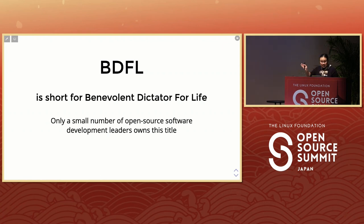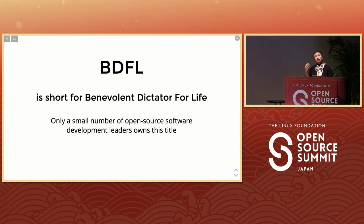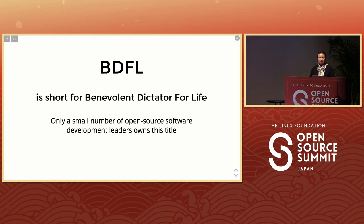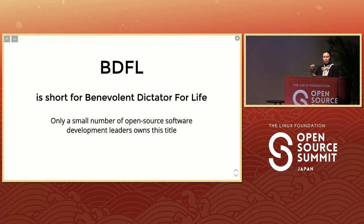BDFL stands for Benevolent Dictator For Life. When I heard that term I thought it was an oxymoron — how can you be a dictator and benevolent? But they chose this term to describe a small number of open source software development leaders who created something, usually at the beginning with very little help. They were essentially a one-person band who owned the project, then gave it open source to everybody to use — that's the benevolent part.